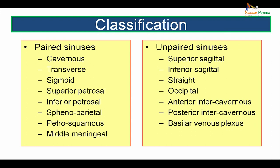The dural venous sinuses are classified as paired sinuses — 8 in number — and unpaired sinuses — 7 in number. The paired sinuses are: cavernous sinus, transverse sinus, sigmoid sinus, superior petrosal sinus, inferior petrosal sinus, sphenoparietal sinus, petrosquamous sinus, and the middle meningeal veins. The unpaired sinuses lie in the midline and are: the superior sagittal sinus, inferior sagittal sinus, straight sinus, occipital sinus, anterior and posterior intercavernous sinuses, and the basilar venous plexus.